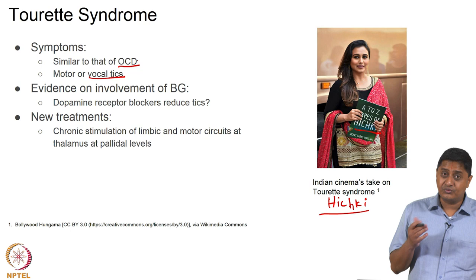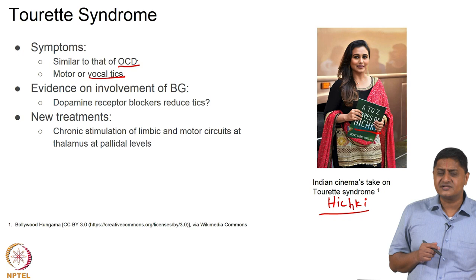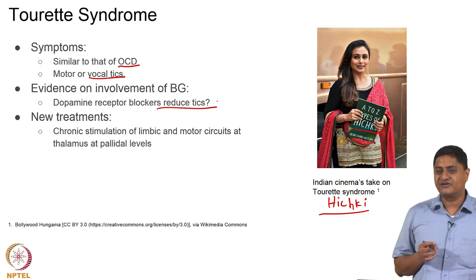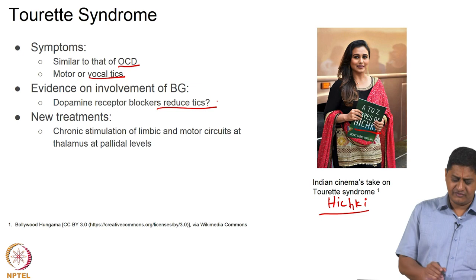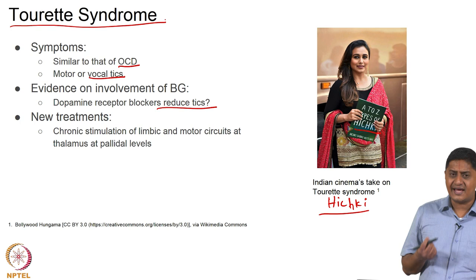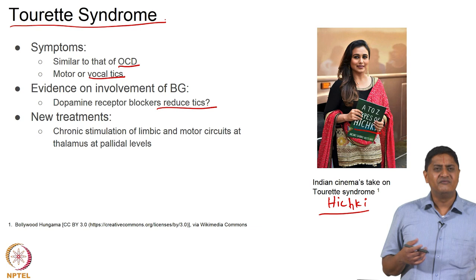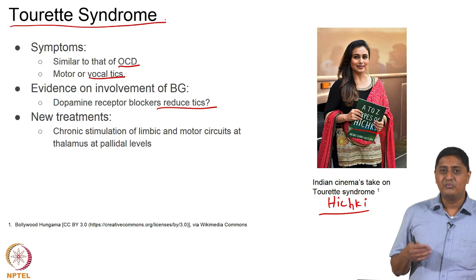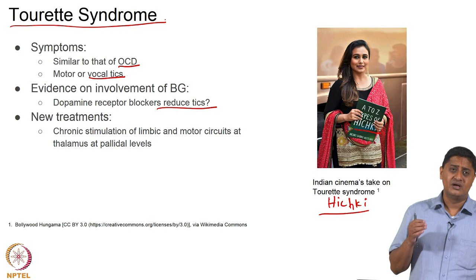These vocal tics are probably due to dysfunction of Basal Ganglia. Using dopamine receptor blockers reduces tics in many cases, and specific regions of Basal Ganglia that are not functioning well cause this kind of vocal tics typical of Tourette's Syndrome. Some treatments have been attempted — chronic stimulation of limbic and motor circuits at the thalamus and pallidal levels seems to help these patients. This involves implanting electrodes in particular regions of the Basal Ganglia and using a pacemaker-type device that continuously stimulates specific regions.